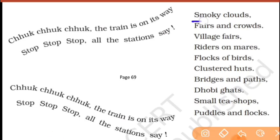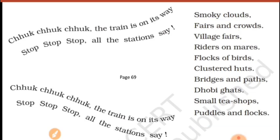Smoky clouds, fairs and crowds. Smoky clouds — matlab aasmaan jo hai, woh dhuva dhuva ho jaata hai jab train chalti hai. Kabhie toh electric train bhi chalti hai, toh ab toh smoky nahi hota, clouds nahi hota.